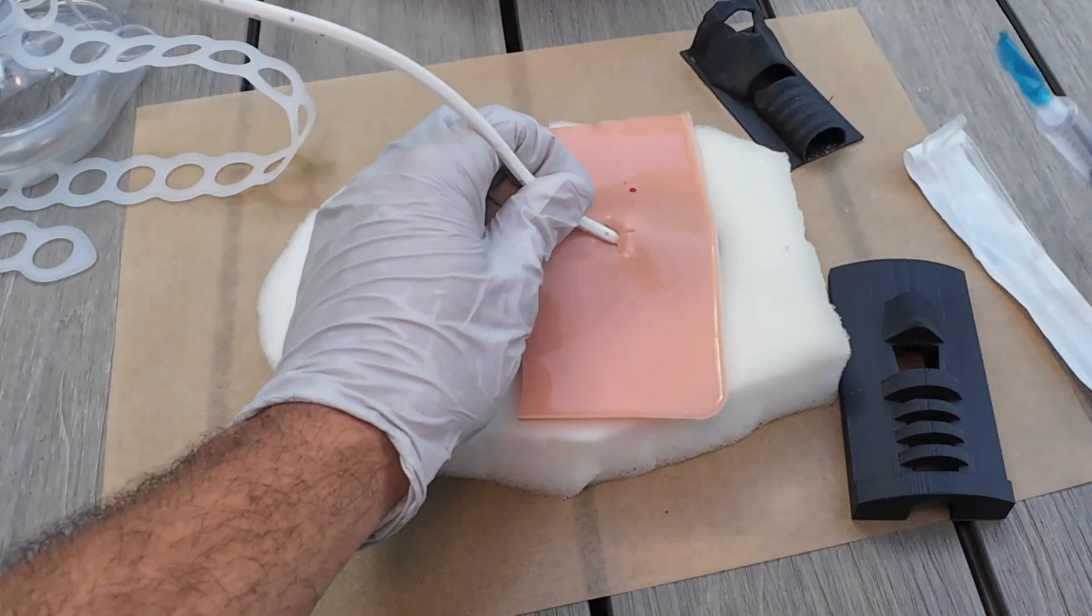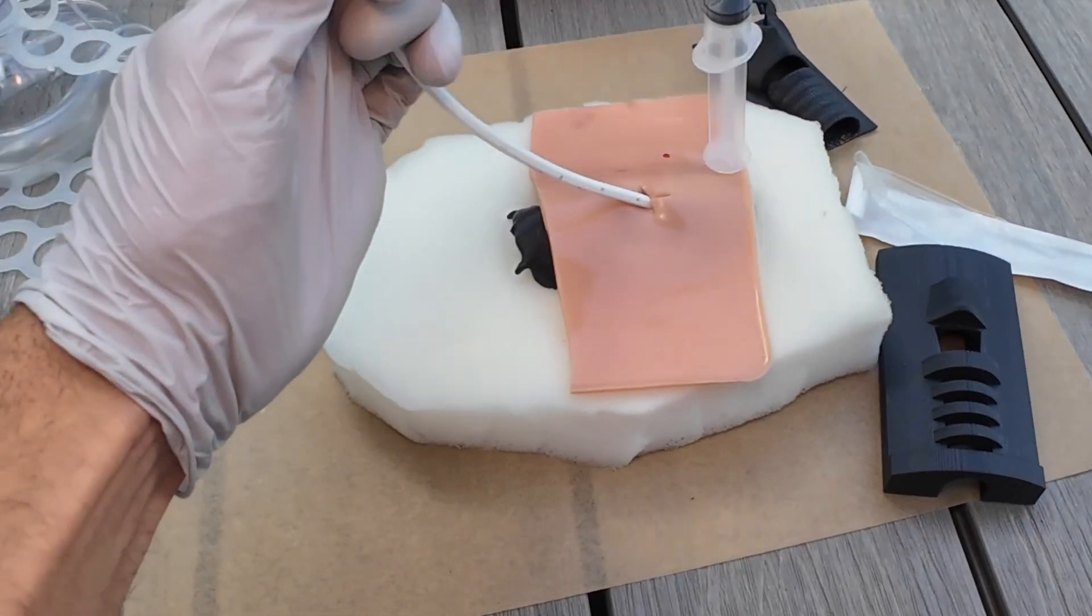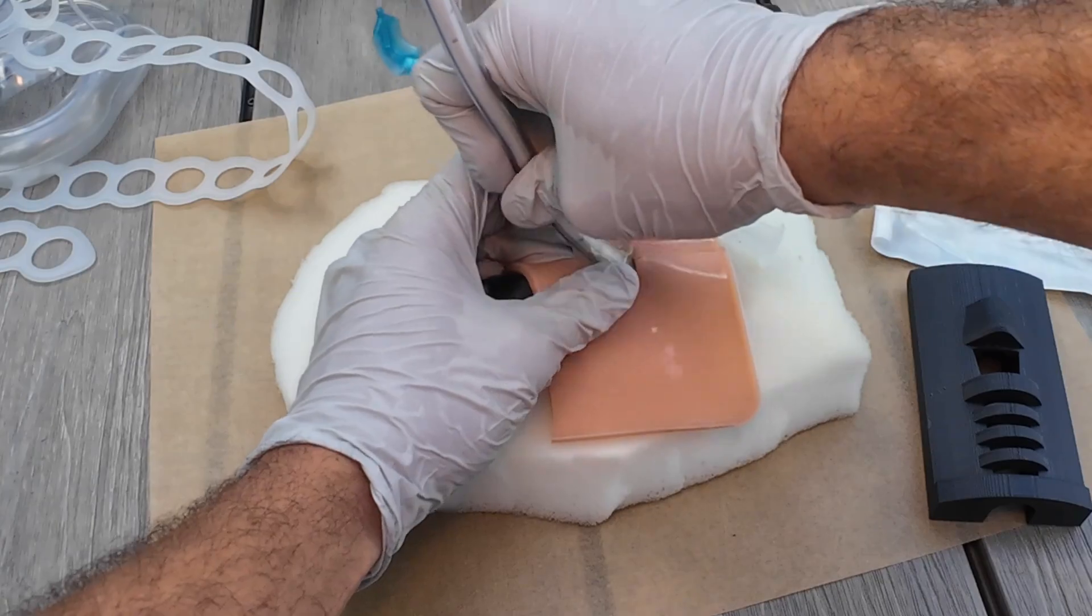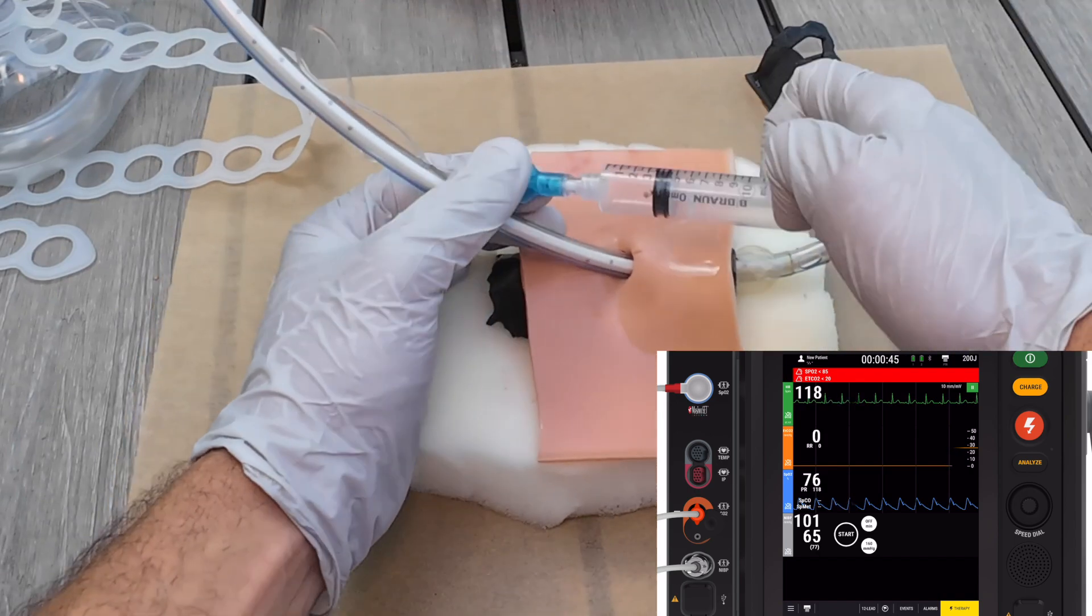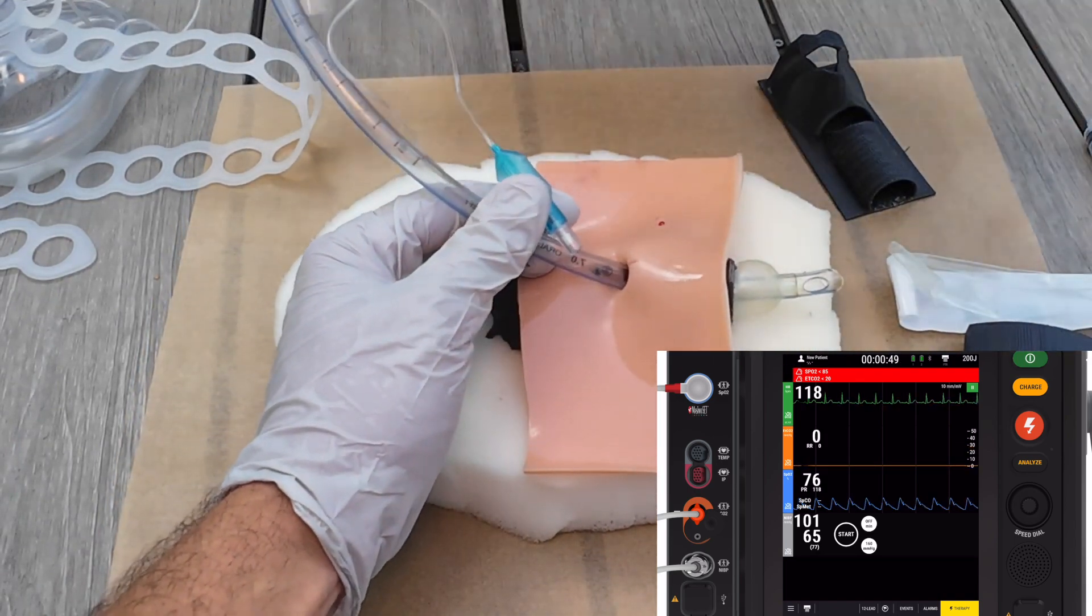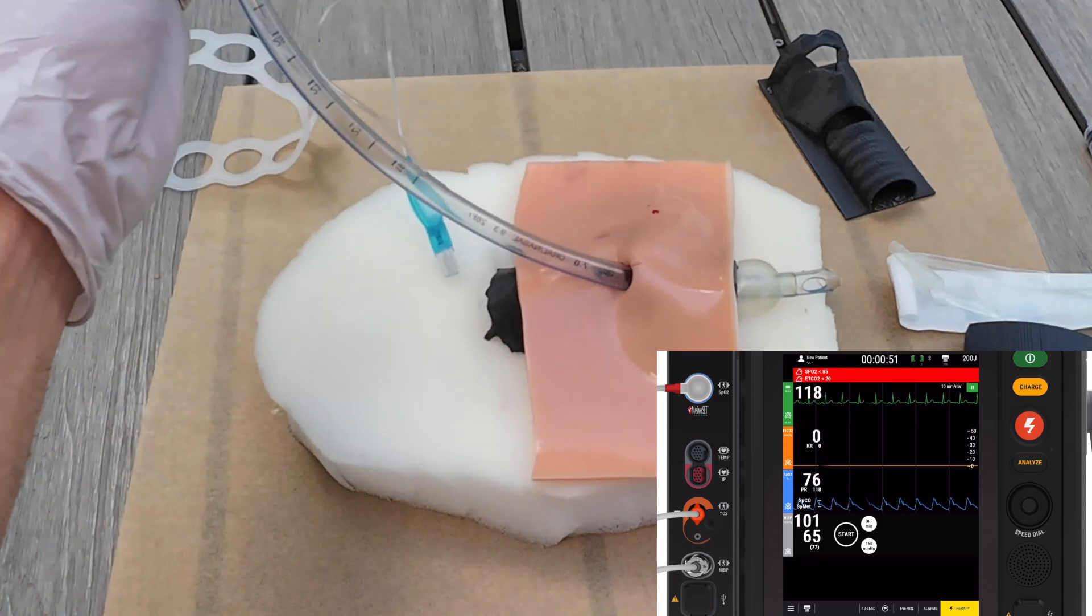Guide it over my bougie. If you have a partner, you would hold the bougie. Maintain that. Place the tube through. Tube through until the line's gone. Fill your pilot. And bag your patient. Using capnography.